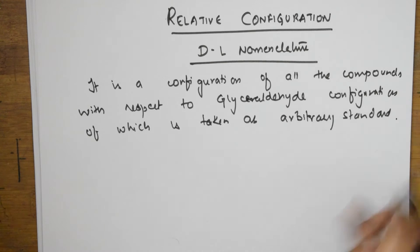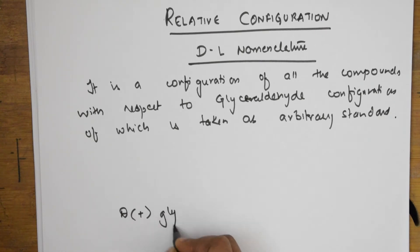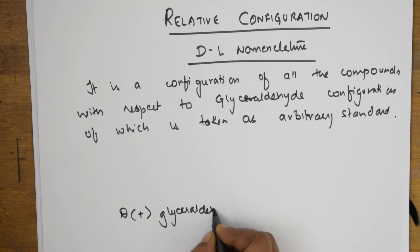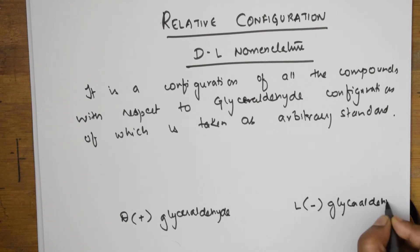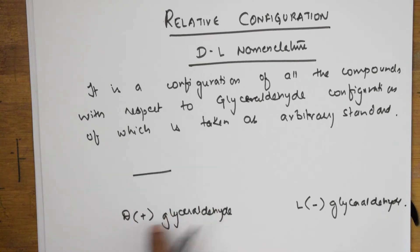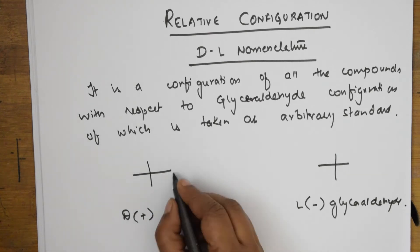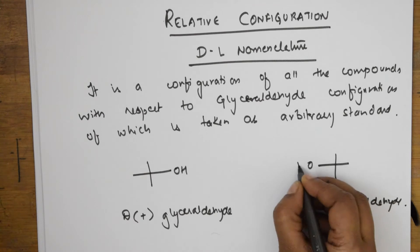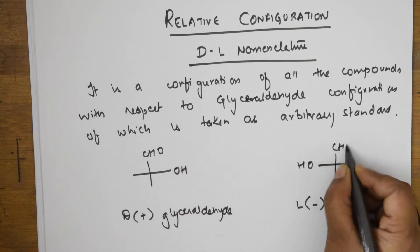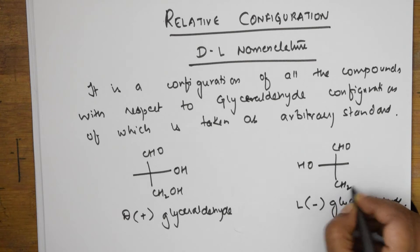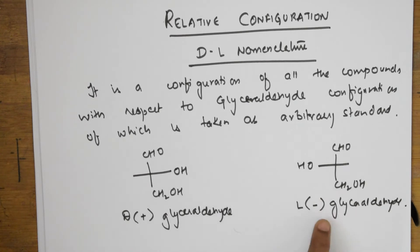Now let us look at the structure of glyceraldehyde to understand. Basically, glyceraldehyde exists in two different forms: one is D(+)-glyceraldehyde and the other is L(−)-glyceraldehyde. In D-glyceraldehyde, the OH group is on the right-hand side. In L-glyceraldehyde, OH is on the left-hand side. Both forms have an aldehyde group at the top and a CH₂OH group at the bottom.